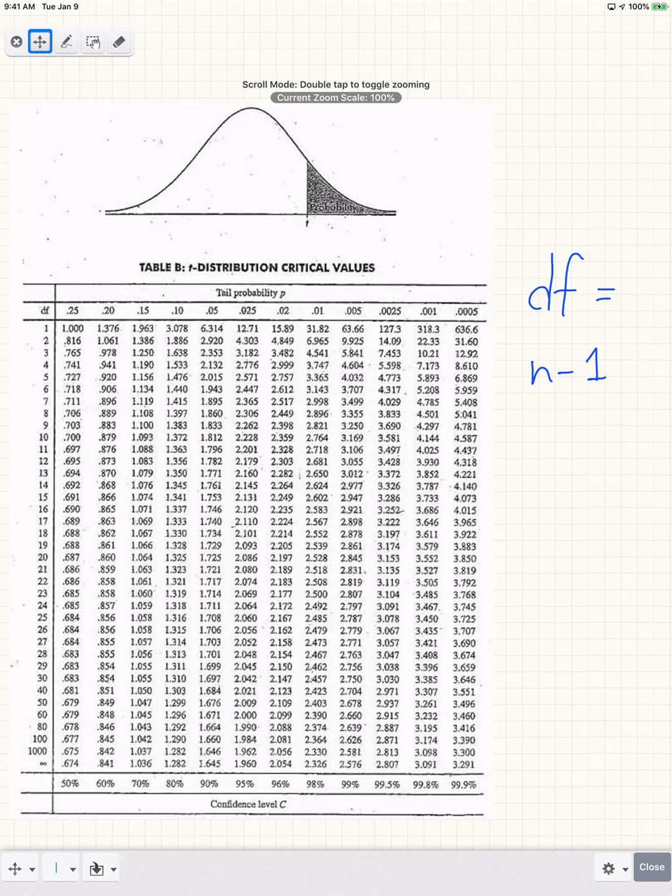Hey everyone, so I wanted to give a brief tutorial on how to read a t-table in order to find a p-value.